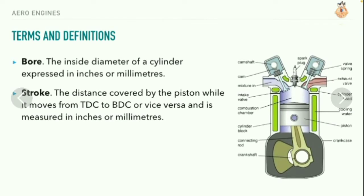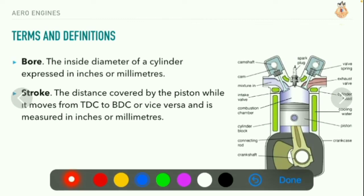Bore: the inside diameter of a cylinder, expressed in inches or millimeters. Here you can see the cylinder and the inside diameter of it, which is nothing but the bore. Stroke: the distance covered by the piston while it moves from top dead center to bottom dead center or vice versa. This is the cylinder; the bottom part is called bottom dead center and the top part is called top dead center.